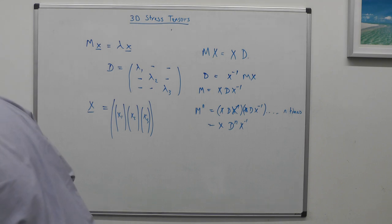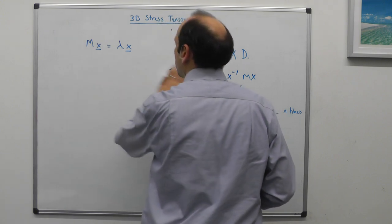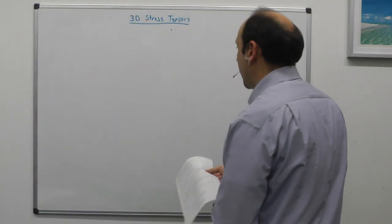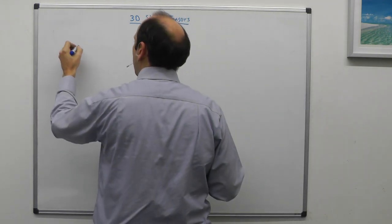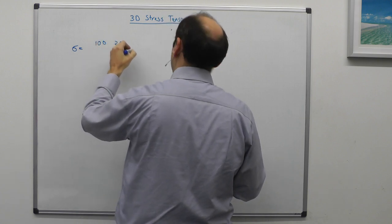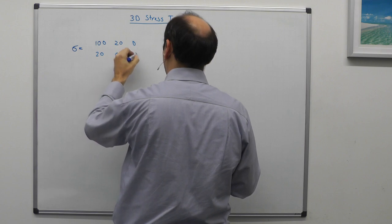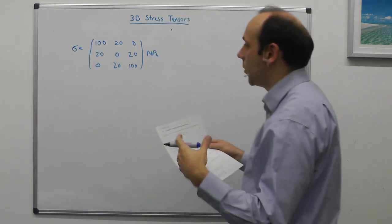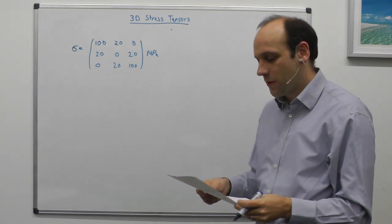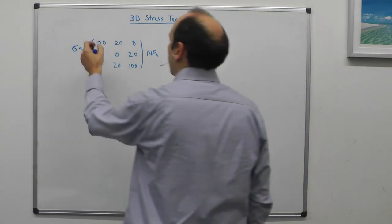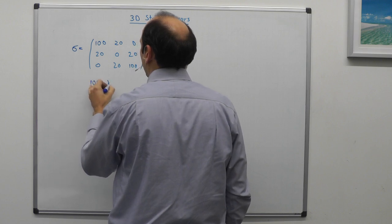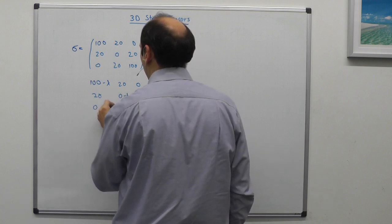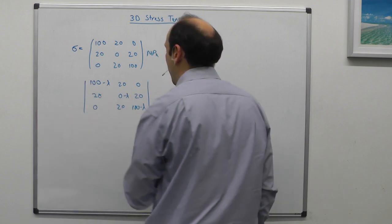Now let's do an example of finding principal stresses, from section 3.6. We have a material subject to the following stress state in megapascals: the matrix is [100, 20, 0; 20, 0, 20; 0, 20, 100]. We want to find the eigenvalues, so we form the matrix with (100 minus lambda), 20, 0, 20, (0 minus lambda), 20, 0, 20, (100 minus lambda), find its determinant, and set it to zero.